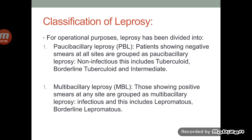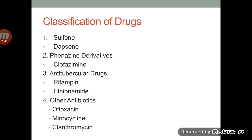Paucibacillary leprosy is basically non-infectious. In this, the patients show negative smears at all the sites. It is subdivided into tuberculoid, borderline tuberculoid and intermediate. Whereas in case of multi-bacillary leprosy, the patient shows positive smears at skin at all the sites. It is an infectious leprosy and it includes lepromatous and borderline lepromatous.